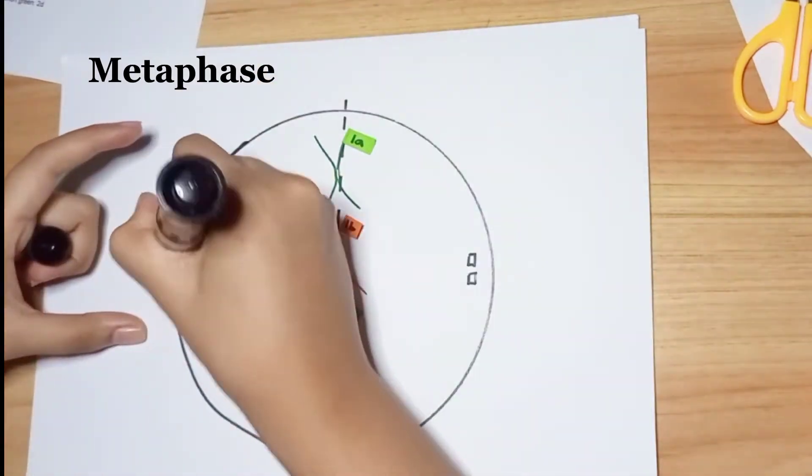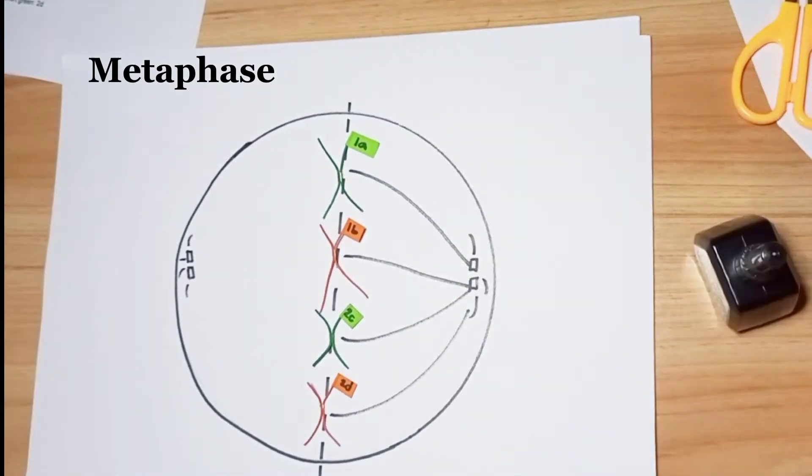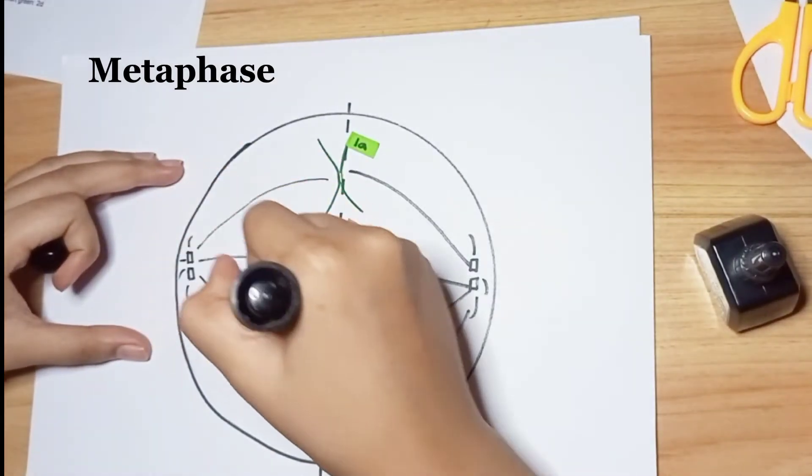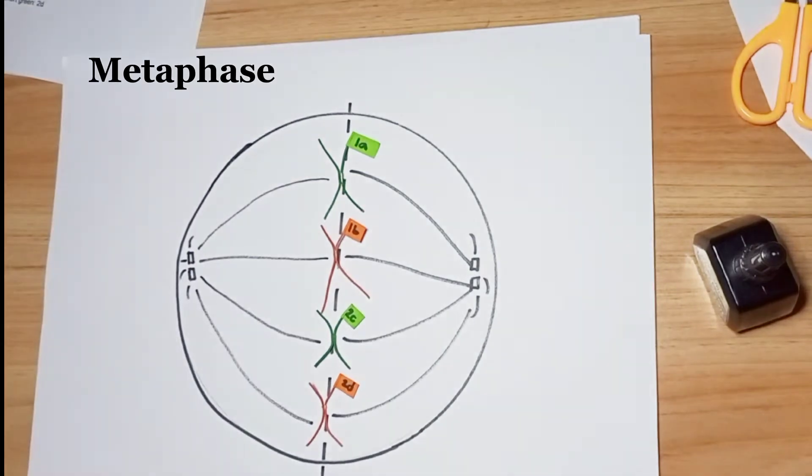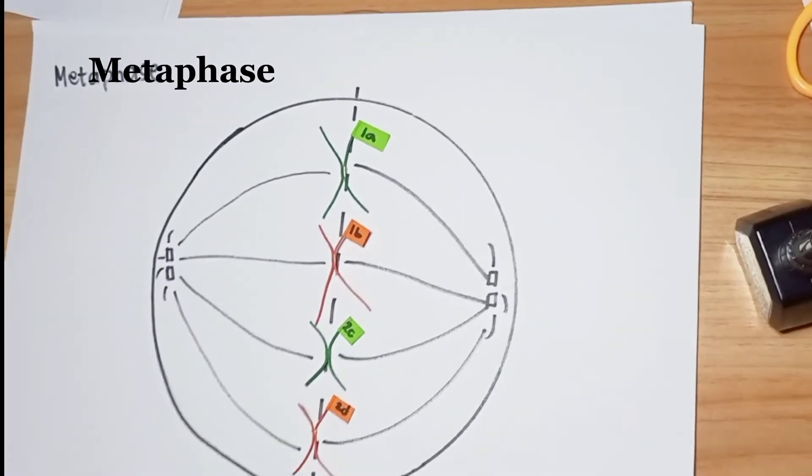The two kinetochores of each chromosome should be attached to microtubules from opposite spindle poles.